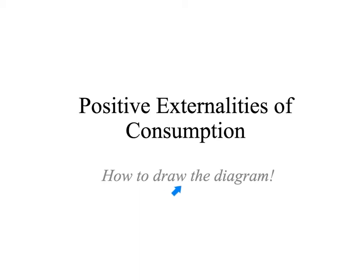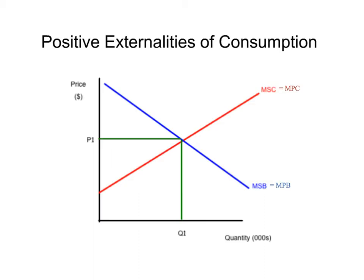We're going to talk about the diagram and how to construct it. All externality graphs start in the same place. Remember, this is consumption. And when you see consumption, you know that the marginal social benefit and one of these two lines is going to shift.